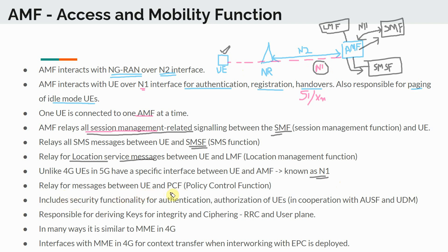AMF also relays messages between the UE and the Policy Control Function (PCF). The PCF is similar to the PCRF in 4G. The PCF can actually push policies directly to the UE — something that was not possible in 4G but is possible in 5G. Those policies get transferred from the PCF to the UE via the AMF, which is why the AMF acts as a relay here.